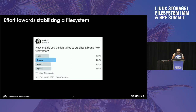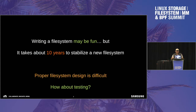I took a poll on Twitter a while ago about how long people think it might take to stabilize a file system, and it seems people think it takes about two years. That's a bit wrong — it takes about 10 years, give or take, depending on who you ask. So proper file system design is really difficult. Whenever you're designing something new, just have patience. So how about testing? Can we help in the testing world for stabilizing file systems?